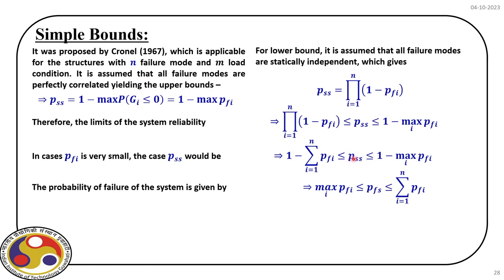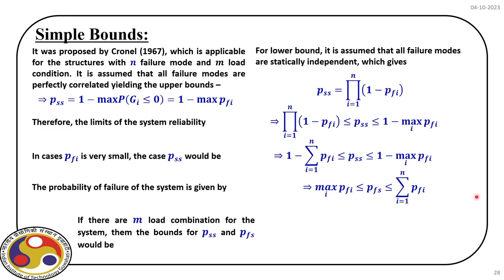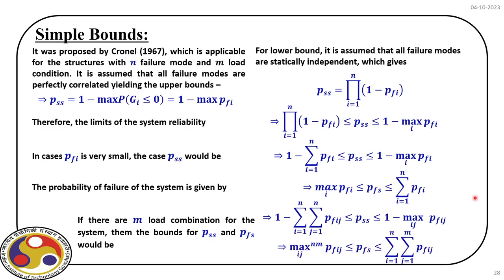From the previous expression for probability of survival, we get the corresponding upper and lower bounds for probability of failure. This simple bound was introduced by Cornell. The bounds for reliability can also be expressed for the probability of failure correspondingly.